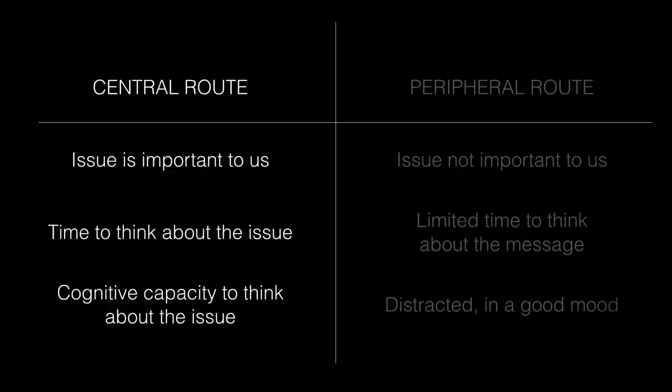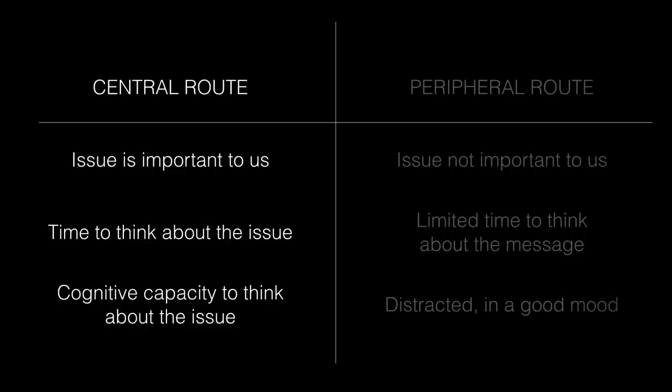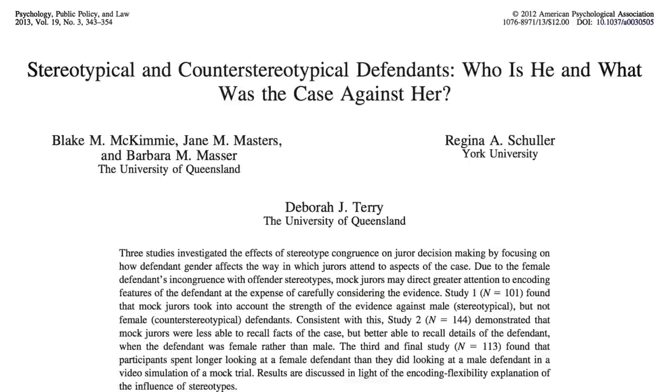So when do we use each route? We use the central route when an issue is important to us and when we have the time and cognitive capacity to think about it. We tend to use the peripheral route when there's limited time, when we're distracted, when the issue is not so important, and also — funnily enough — when we're in a good mood. One of the assumptions underlying all of these models is that perceivers like to put in the minimum amount of cognitive effort possible, which has led some people to refer to perceivers as cognitive misers or mental sluggards.